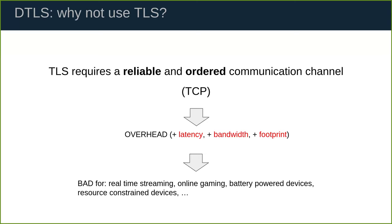Usually it's the TCP protocol that gives these guarantees to the TLS layer. The problem is that TCP has to do a lot of housekeeping to provide these guarantees — buffering, reordering, and explicit acknowledgements to ensure message delivery. All this housekeeping introduces different types of overhead: latency overhead, bandwidth overhead, and also footprint overhead in terms of code size and memory.